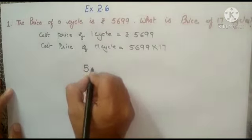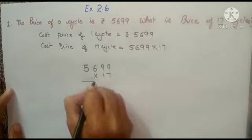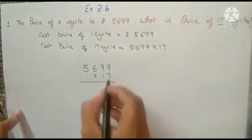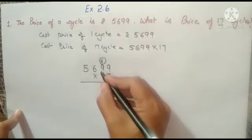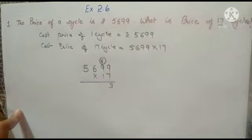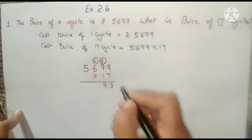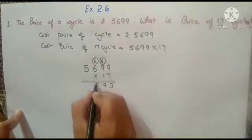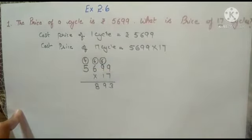How do we multiply? In the previous exercise we did 99 multiplied by 17. Here we will first use the 7 times table. 7 × 9 is 63, write 3 and carry 6. 7 × 9 is 63 again, plus 6 is 69 — write 9, carry 6. 7 × 6 is 42, plus 6 is 48 — write 8, carry 4. 7 × 5 is 35, plus 4 is 39.